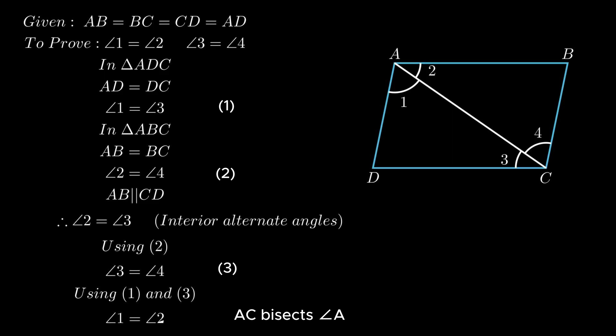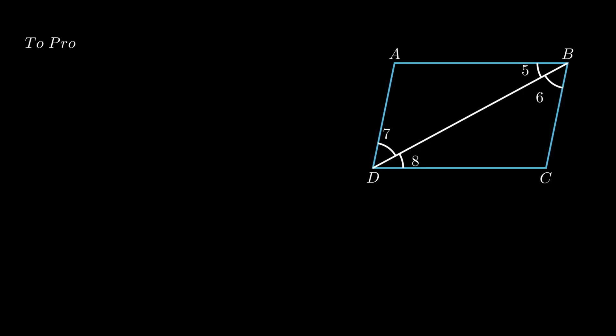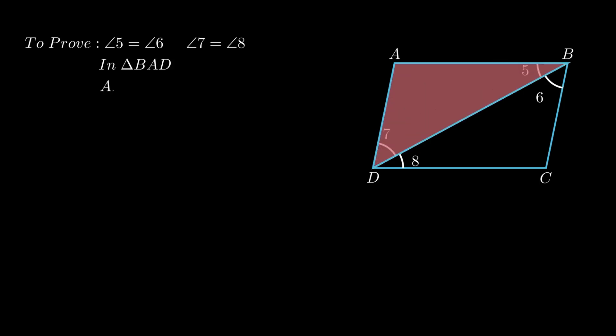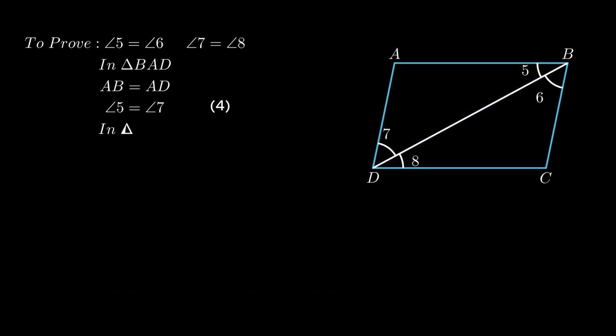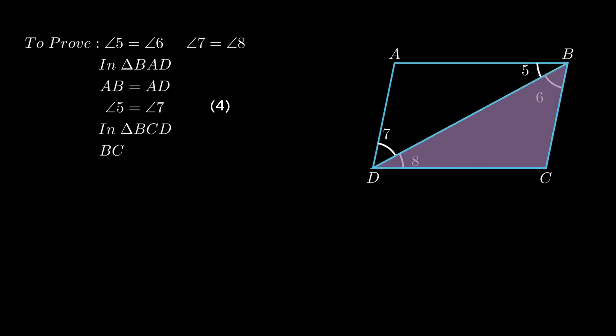Now to prove diagonal BD bisects angle B and angle D, join diagonal BD, resulting in the formation of angles 5, 6, 7, and 8 respectively. To prove angle 5 equals angle 6 and angle 7 equals angle 8: consider triangle BAD — since side AB equals side AD, therefore angle 5 equals angle 7, as angles opposite to equal sides are equal.